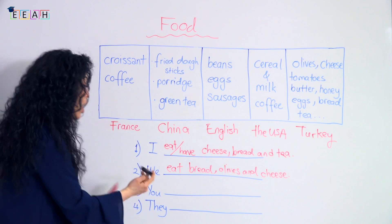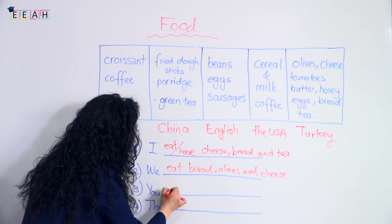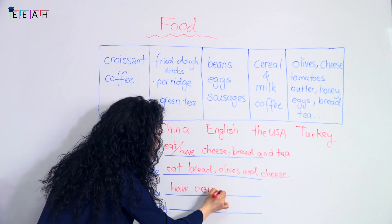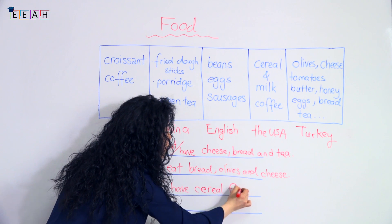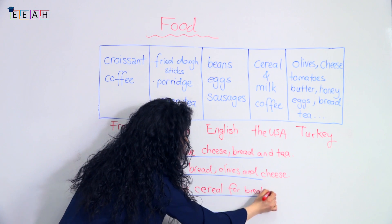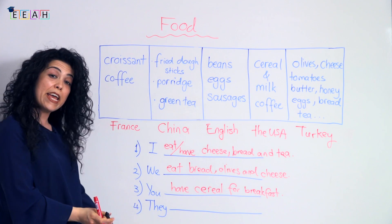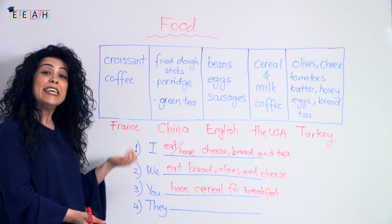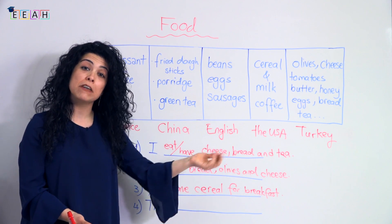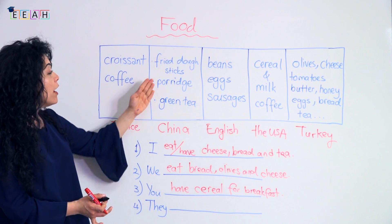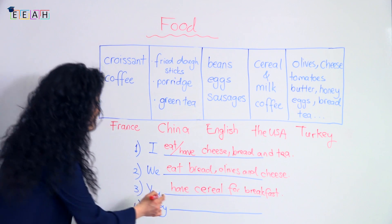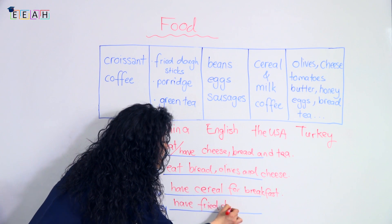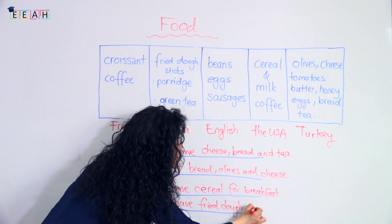Next one — 'you.' Let's say you have cereal for breakfast because you're in a hurry: you have cereal for breakfast. The last one — 'they.' Let's think about people from China: Chinese people have fried dough sticks for breakfast. Yummy! We should all try it.